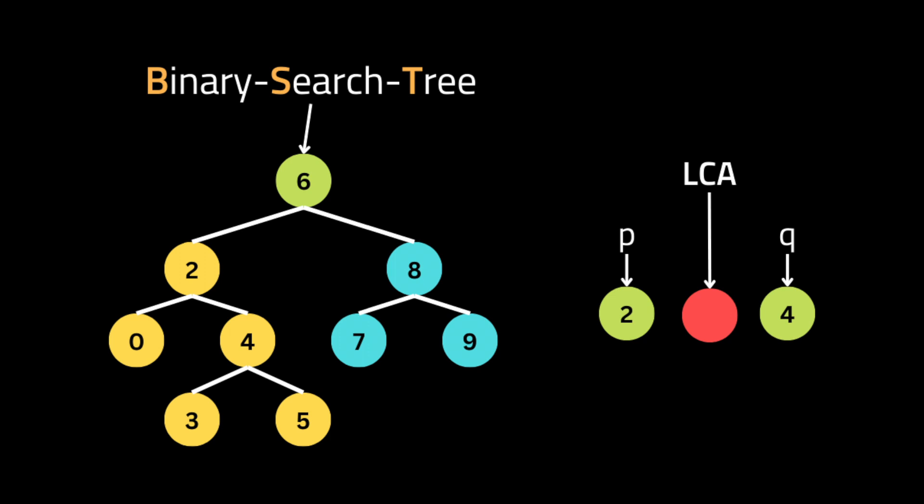The most important information to solve this problem is that we have a binary search tree. In computer science, a BST is called an ordered or sorted binary tree — all nodes in the left subtree are smaller than the root, and all nodes in the right subtree are bigger than the root node.